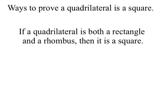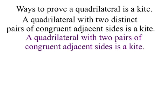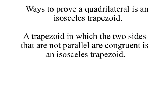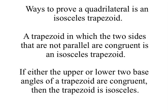To prove a quadrilateral is a square, simply prove that it is both a rectangle and a rhombus. To prove that a quadrilateral is a kite, use the reverse of the definition: a quadrilateral with two distinct pairs of congruent adjacent sides is a kite, or a quadrilateral with two pairs of congruent adjacent sides is a kite. Another way: if exactly one diagonal of a quadrilateral is the perpendicular bisector of the other, then the quadrilateral is a kite; or if one or both diagonals is the perpendicular bisector of the other, the quadrilateral is a kite. Finally, a trapezoid in which the two non-parallel sides are congruent is an isosceles trapezoid, and if either the upper or lower two base angles of a trapezoid are congruent, then the trapezoid is isosceles.